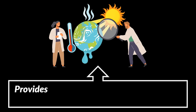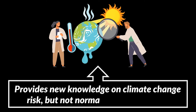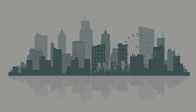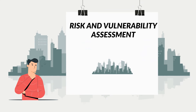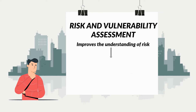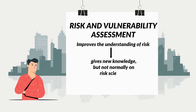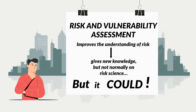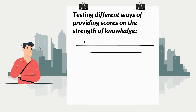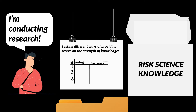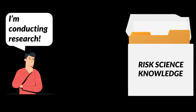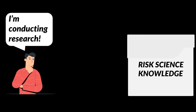A climate change risk assessment provides new knowledge on climate change risk, but not normally on risk science. A consulting firm conducting a risk vulnerability assessment for a municipality or country improves the understanding of risk, so it gives new knowledge, but not normally on risk science. But it could. Say that the risk assessment tests different ways of providing scores on the strength of knowledge linked to the likelihood judgments. Then risk research is being conducted, and the experience from these tests could add new science knowledge and be published in a risk journal.